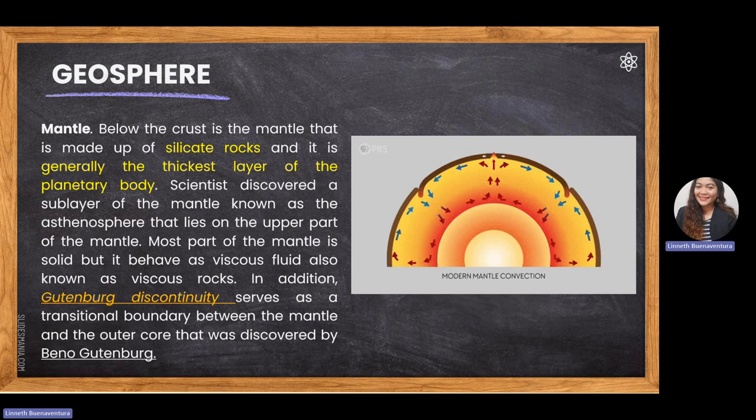Plate tectonic theory proposes that the lithosphere above the asthenosphere is divided into major plates and smaller plates resting on the soft or liquid rocks of the asthenosphere, causing motion. This is why the supercontinent Pangaea, introduced by Alfred Wegener, gradually drifted apart to form the different continents we know today — the asthenosphere's convection current drove the breakup.